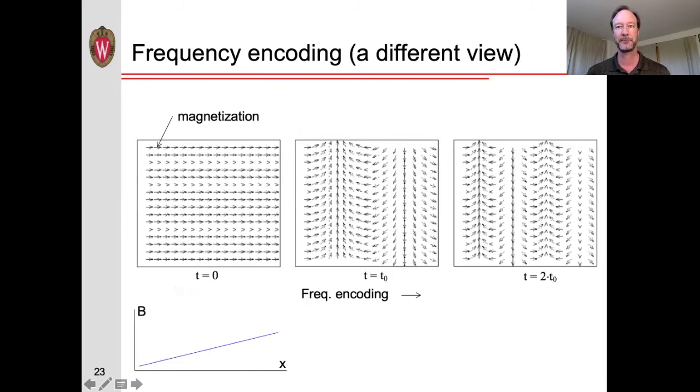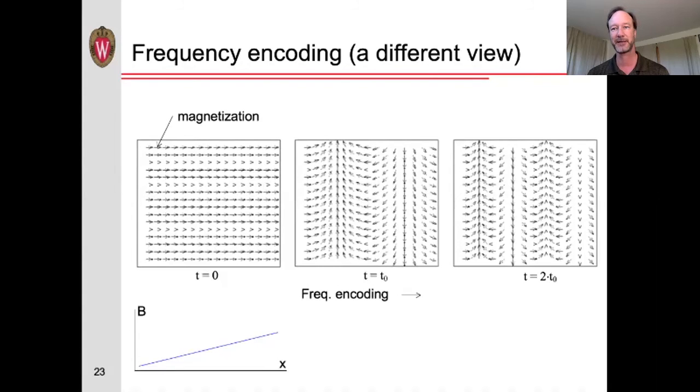With frequency encoding, we apply a magnetic field gradient while we acquire the signal. If we look at the magnetization in different parts of the image, as represented here with these set of arrows, then initially after excitation, all of the spins are pointing in the same direction. But a short time later, the spins farther along in the x direction will be precessing a bit faster and will have gotten ahead, while those in the opposite direction will have gone more slowly. So over time, the magnetization vectors are getting twisted up in the x direction.